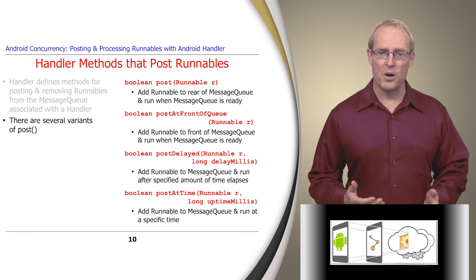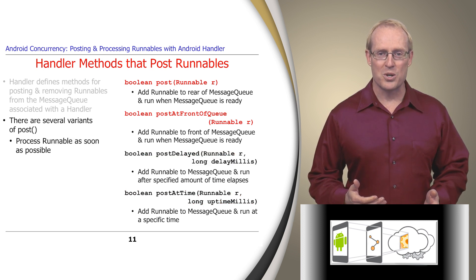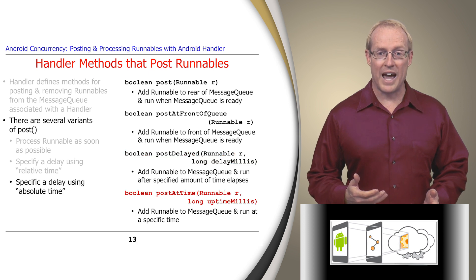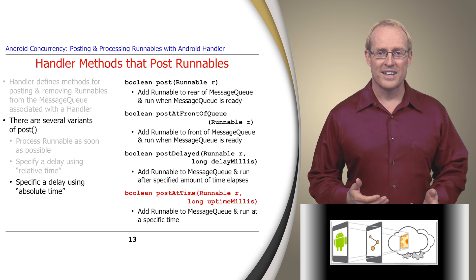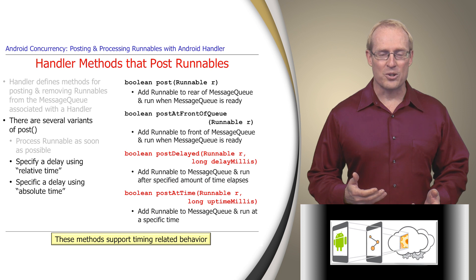There are several variants of post, some of which are highlighted on this slide. A runnable can be posted to a handler in several ways — for example, it can be added to the front or rear of the message queue and processed as soon as the queue is ready to do so. Alternatively, a delay can be specified using relative time, which indicates how much time must elapse before the runnable can be processed. Or finally, a delay can be specified using absolute time, which indicates when the runnable should be processed. The latter two methods allow programs to implement timeouts, ticks, and other timing-related behavior.